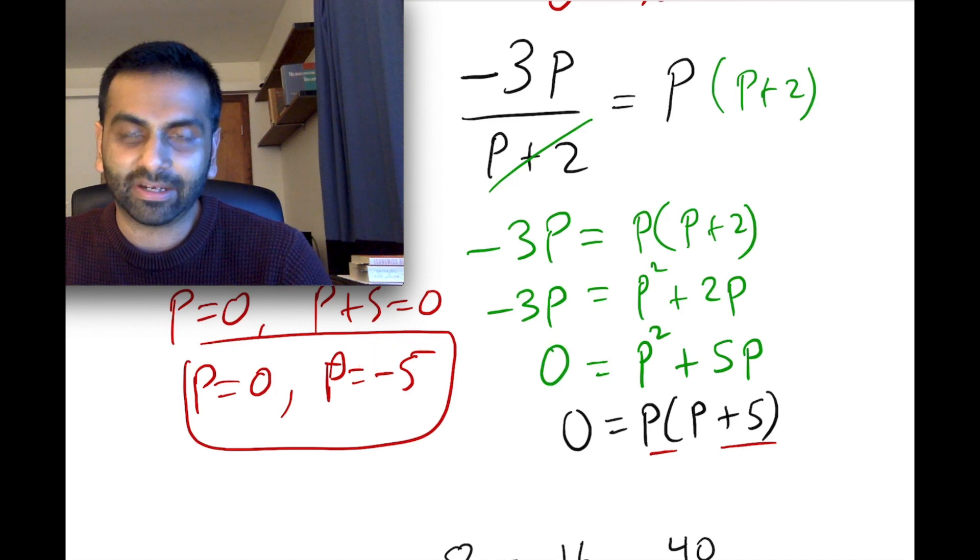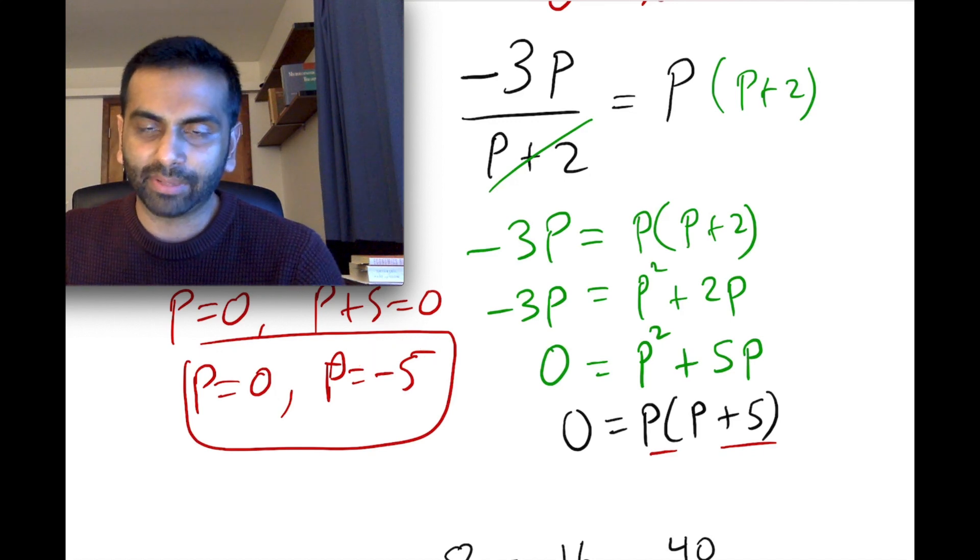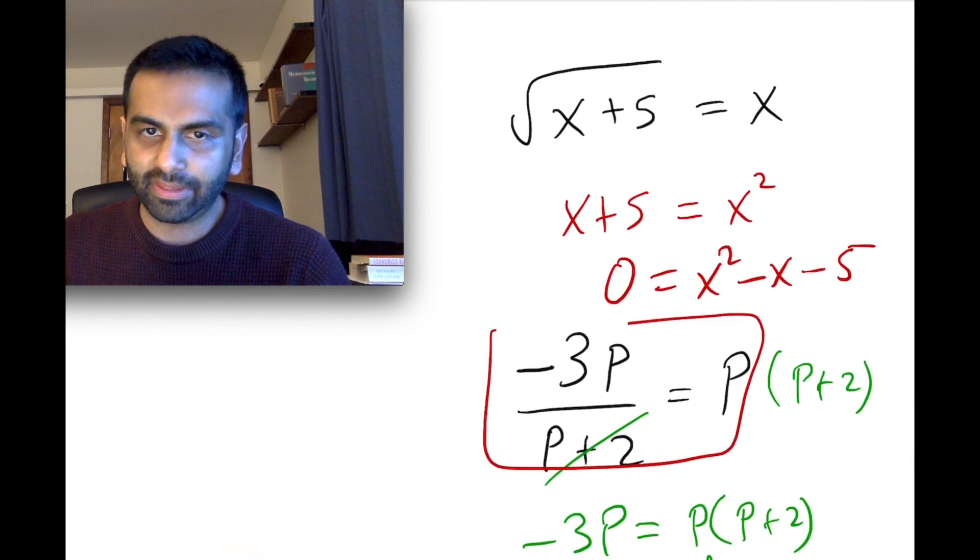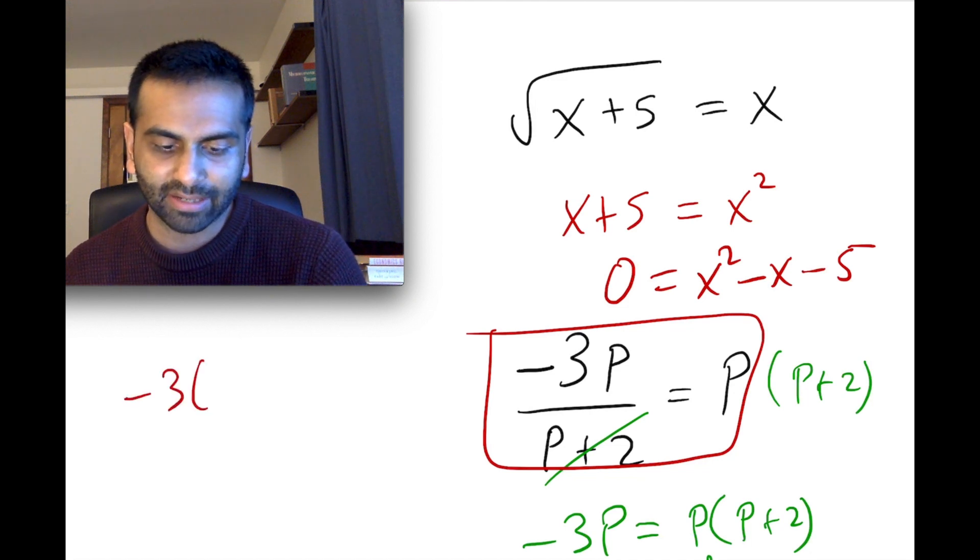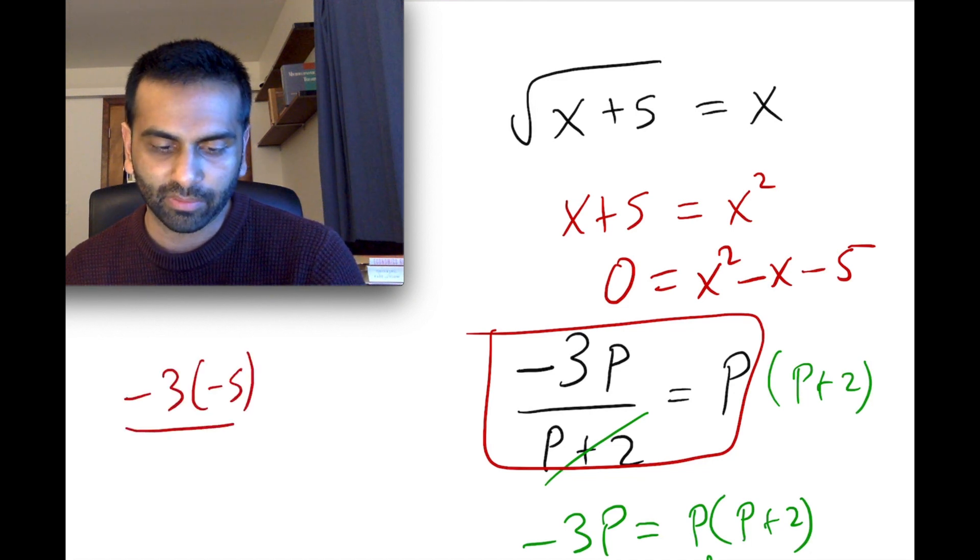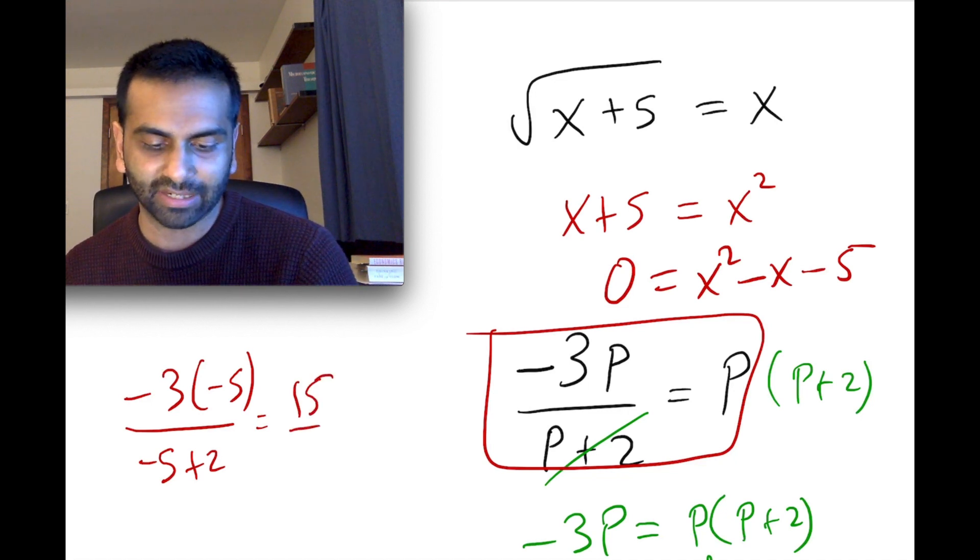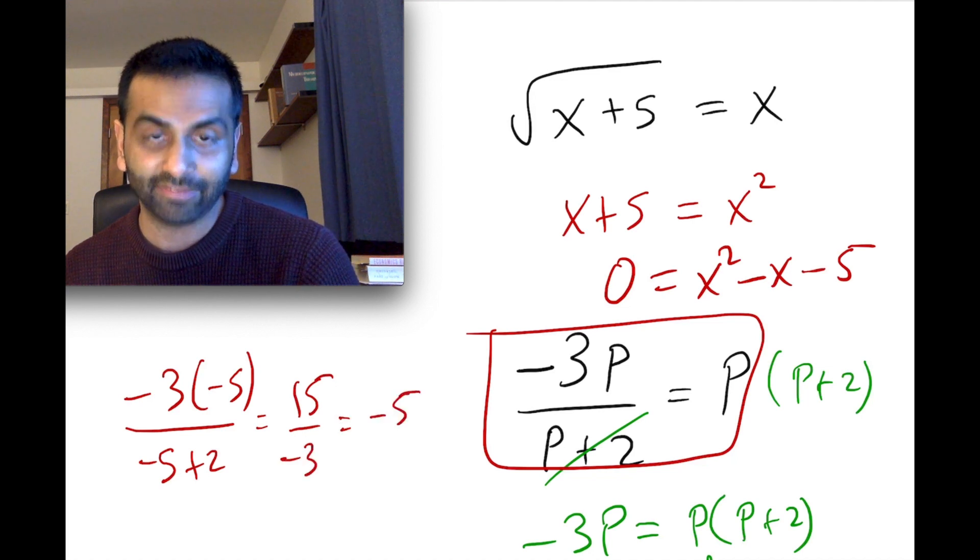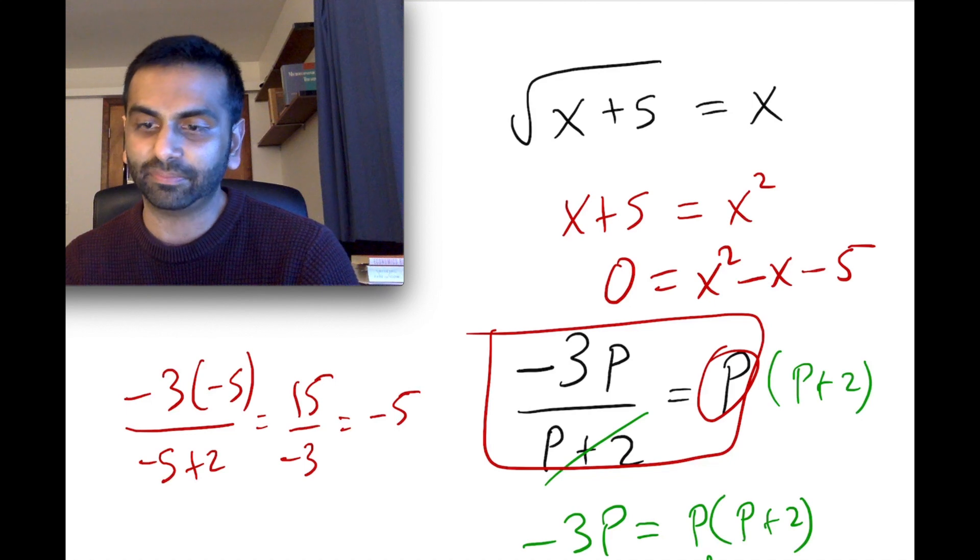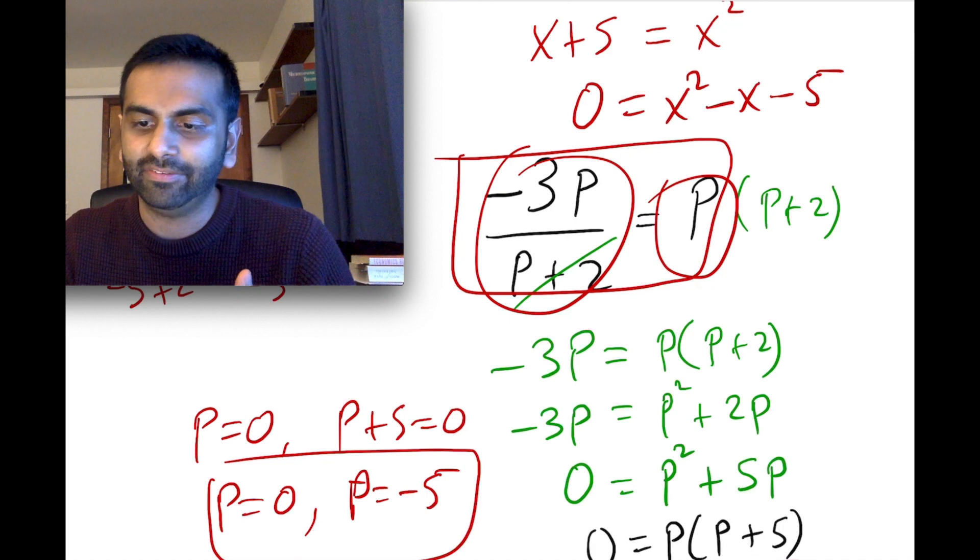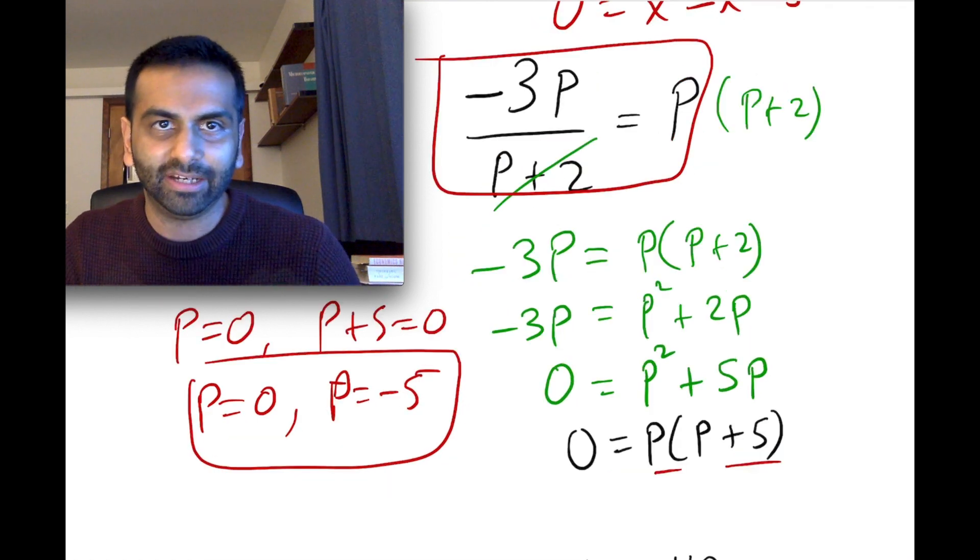And then negative 5, we should again just check that as well. So if we were to plug in negative 5 for our original thing here, we'd get negative 3 times negative 5 over, p is negative 5 plus 2. So that simplifies to give us on the top positive 15. And on the bottom, negative 5 plus 2 is going to give us negative 3. So overall, that's negative 5. So the left-hand side is negative 5. The right-hand side is p, which was negative 5. So there you go. Negative 5 equals negative 5. So that's true. So neither of those were extraneous. So we're good.